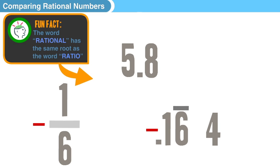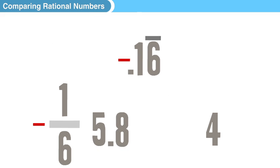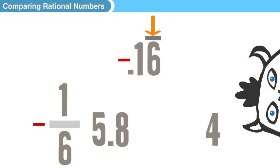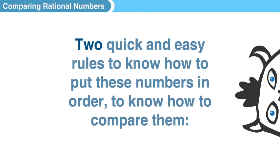It finishes, it's a rational number. Negative point one six repeating does go on forever, but it repeats, so it falls in our definition of rational numbers. Okay, so we're going to look at two quick and easy rules to know how to put these numbers in order, how to compare them.